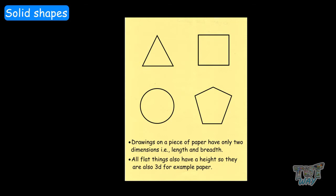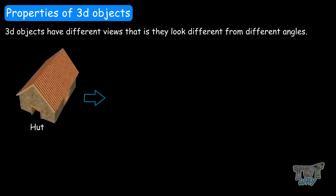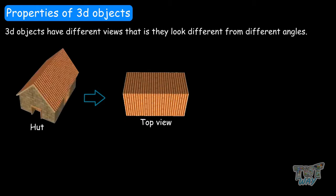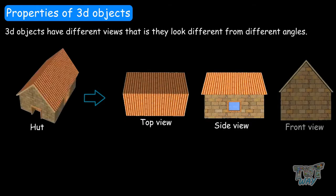Now let's move on to some properties of 3D objects. 3D objects have different views — that is, they look different from different angles. For example, the top view of a house is different from the side view and from the front view. So this hut has three different views: the side view, top view, and front view.